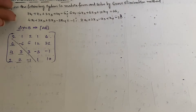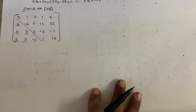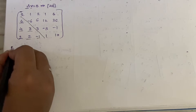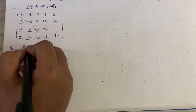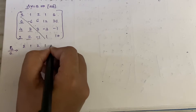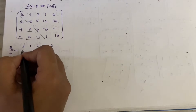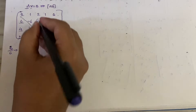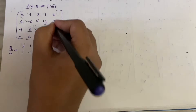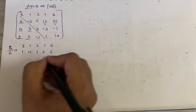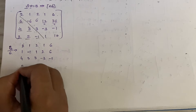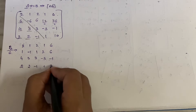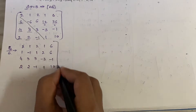Our first operation is R2 → R2/6. The new R2 becomes: 6/6=1, -6/6=-1, 6/6=1, 12/6=2 | 6/6=1. So R2 is now: 1, -1, 1, 2 | 1. The other rows remain: R1: 2,1,2,1|6; R3: 4,3,3,-3|-1; R4: 2,2,-1,1|10.